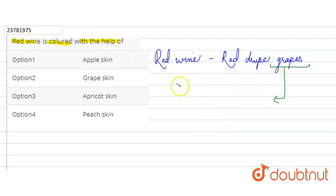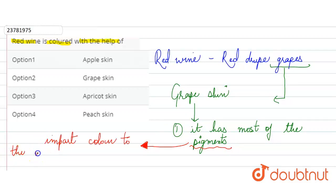So basically, in the grape skin there are many pigments. These pigments impart color to the wine during the fermentation process.